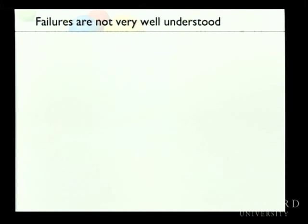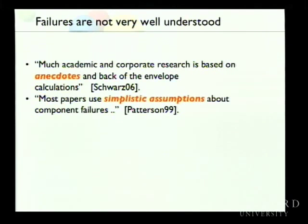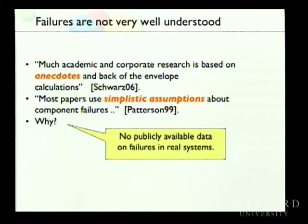Keeping systems reliable is not a new problem — even 20 or 30 years ago people wanted reliable systems. But we haven't made as much progress as we'd like, and I think one reason is that failures are not very well understood. A lot of academic and corporate research is based on anecdotes and back-of-the-envelope calculations. Most papers use simplistic assumptions about component failures, and the reason is that there's virtually no publicly available data on failures in real production systems.